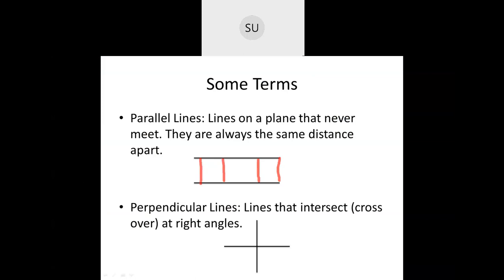For example, the best example for parallel lines is your railway track. Your railway tracks are always parallel — they never meet and they are at the same distance apart. So these are parallel lines.